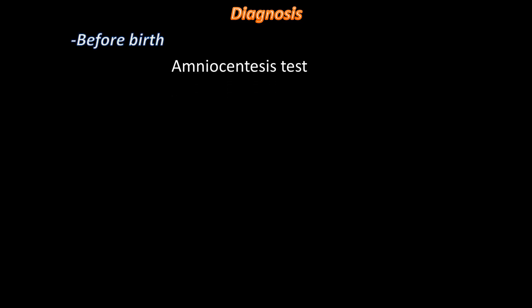Diagnosis can be made before or after birth. If the family has a history of galactosemia, it can be tested prior to birth by taking a sample of fluid from around the fetus — a procedure called amniocentesis. Amniocentesis involves sampling amniotic fluid using a hollow needle inserted into the uterus to screen for developmental abnormalities in the fetus. Alternatively, a sample of fluid can be taken from the placenta in a procedure called chorionic villus sampling, or CVS.